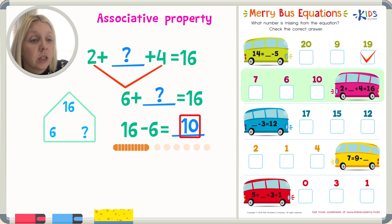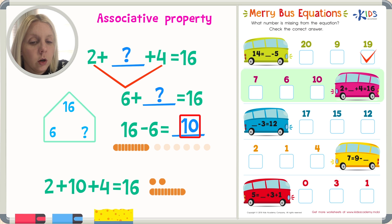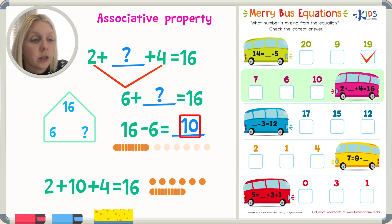But I need to go back and check, because the directions say check the correct answer. I'm going to plug it into my original equation: two plus ten plus four equals sixteen. Let's see — ten, eleven, twelve, thirteen, fourteen, fifteen, sixteen. So that tells me that's the correct answer. Even though it looked really hard, we found the answer using the associative property.